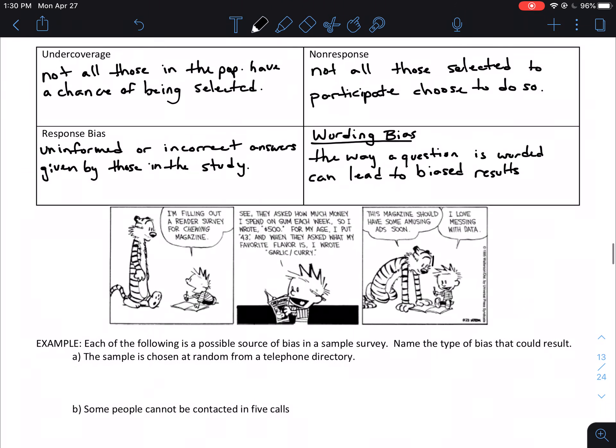The first of which, under coverage. In under coverage, not all those in the population have a chance of being selected. So maybe if you were going to talk about under coverage, maybe you send an email out to all of the students in a particular class. Well, the problem with that is maybe some of those students didn't have internet access at home. So while you sent out the email, they didn't even have a chance to read the email. That would be an example of under coverage, where not all those in the population had a chance of being selected.